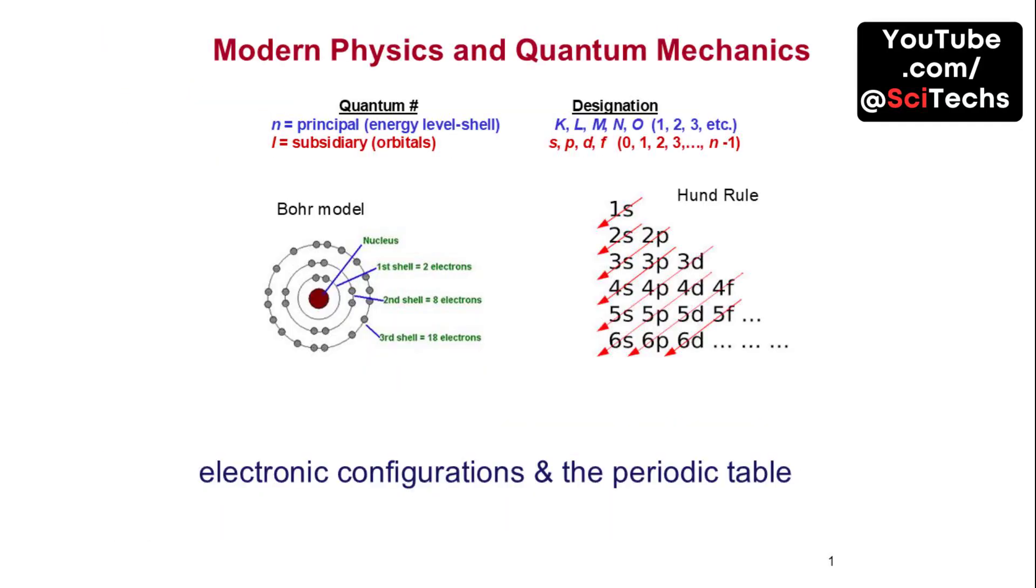Modern physics and quantum mechanics play a significant role in understanding electronic configurations and the periodic table. The Bohr model and Hund's rule help explain how electrons are arranged in atoms.